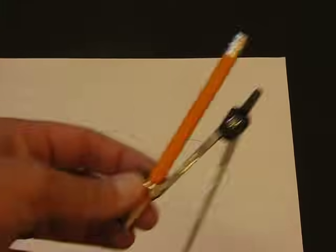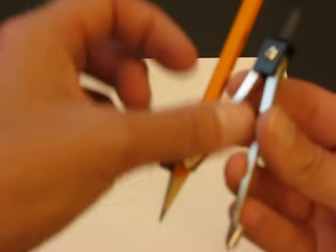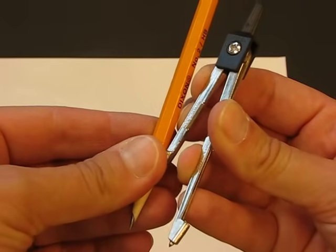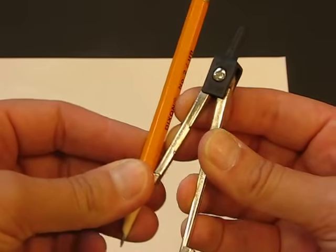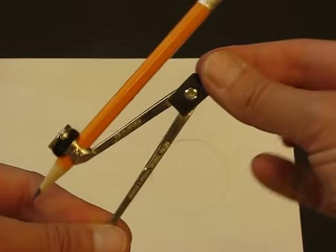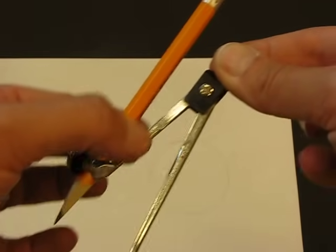Do not hold the compass by both legs, because if you do, what happens is it starts to close, and then you're going to get an uneven circle. So always hold the leg that has the point or the handle part there. You do not need to hold this part.